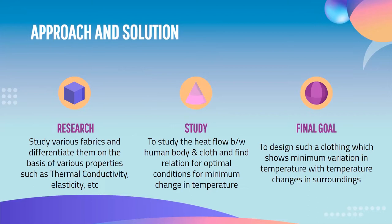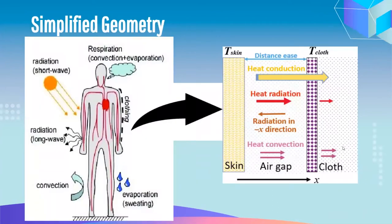Designing such a system requires thorough study of all the mechanisms of heat transfer and heat exchange going on in the human body and clothes. This is the geometry of the human body on the left, showing different heat transfer modes. On the right, if we zoom in at any area of the clothes, there is an air gap between skin and clothes in which most of the heat transfer occurs. This is a broad overview of the geometry on which we are going to work.